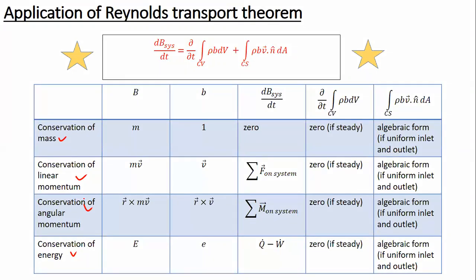All these conservation laws are similar to what we discussed with the map of Azerbaijan or the bank account analogy. You have a fixed amount of a property - it can be mass, linear momentum, angular momentum, or energy. It doesn't increase or decrease, but if there are any changes in linear or angular momentum, that means there are additional effects acting on our system.